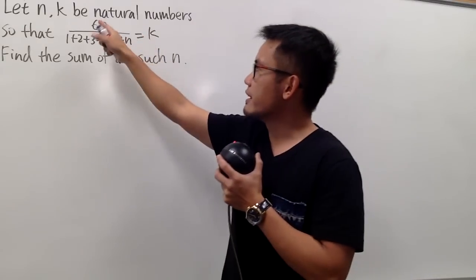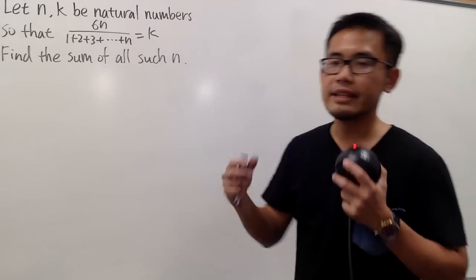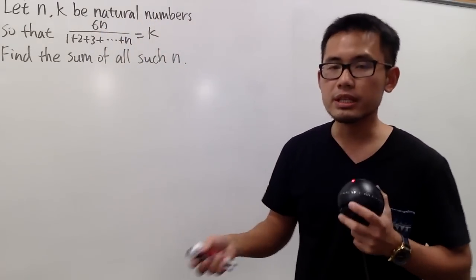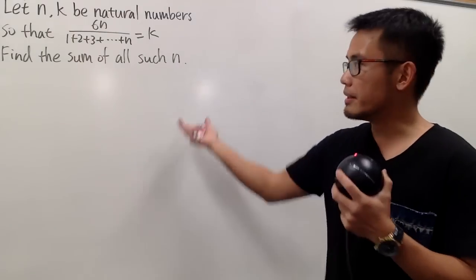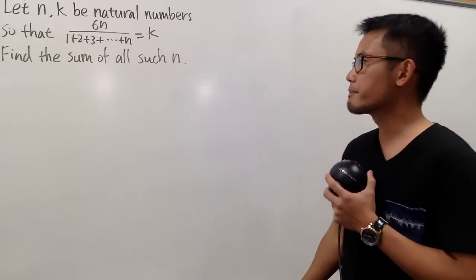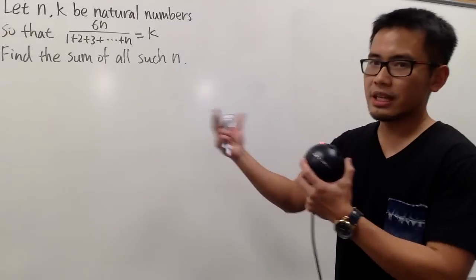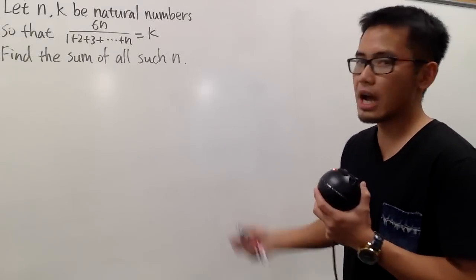First of all, n and k are natural numbers, meaning that they are positive whole numbers, and sometimes some people will include 0 to be a natural number, but in this case, it doesn't really matter. So now, let's just break this down to see what's going on.